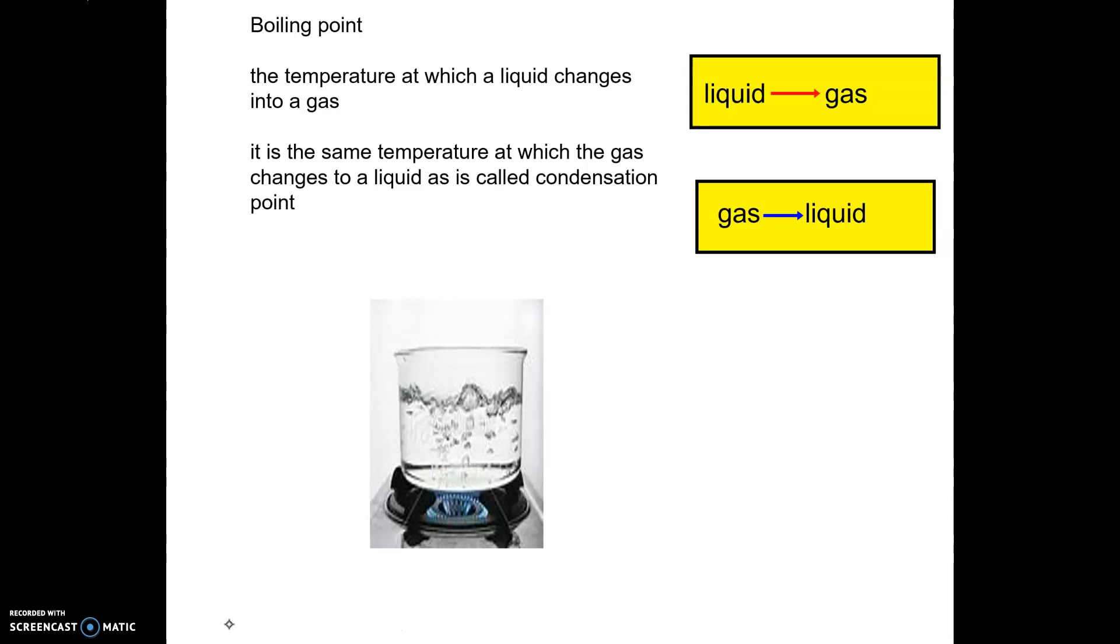We have boiling point, the temperature at which a liquid changes into a gas. It is also the same temperature that a gas changes to a liquid, as it is called that condensation point. So they happen at that same temperature. So it's just that perfect temperature where the liquid turns to a gas, or it's just on the edge where that gas turns back to that liquid.